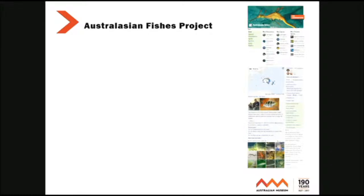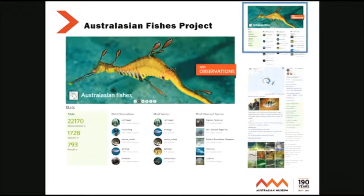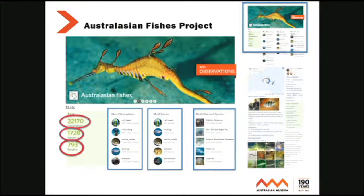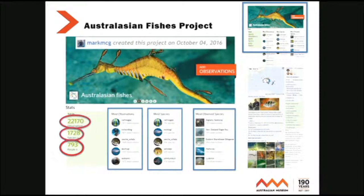This is the front page of Australasian Fishes. You can see the number of observations, number of species covered, number of people — that's over 800 people now. You can see we've got leaderboards for people with the most observations. Ralph McGee has got over 1,900 observations. Ralph is also leading the species count — he's got the most species and the most observed species. I started this project 15 months ago and already it's got over 22,000 observations, so you can see it's really taking off.